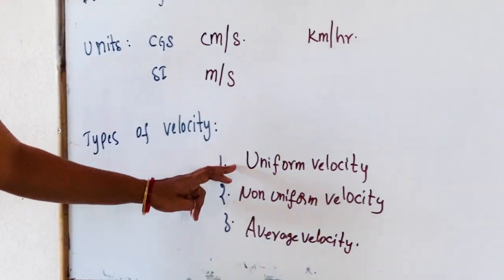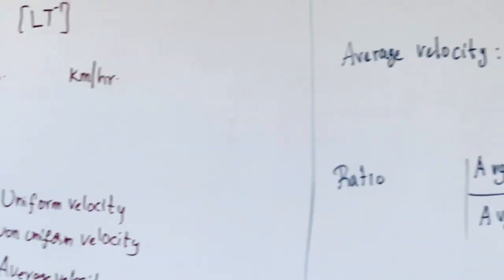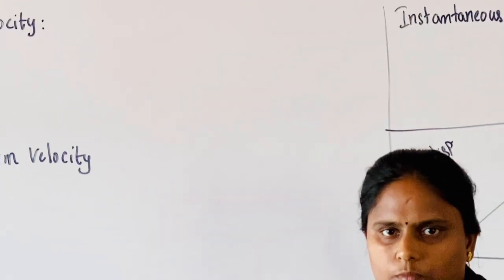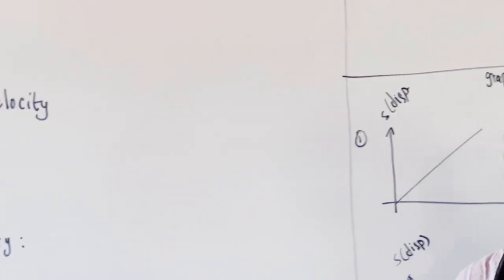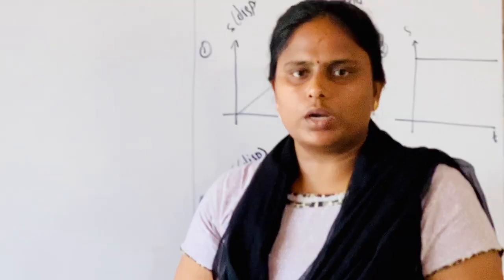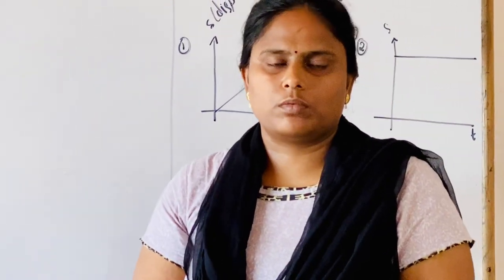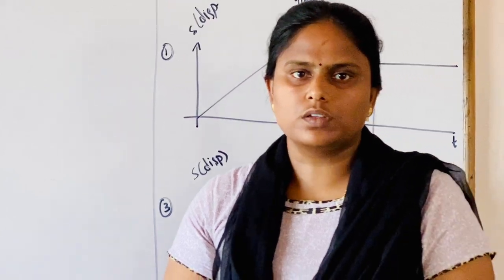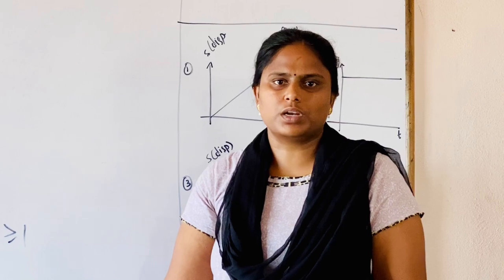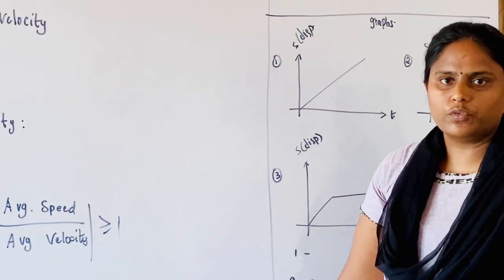Coming to the first one — uniform velocity. If a body moves equal displacements in equal intervals of time, we can say the body is moving with uniform velocity. We can also say that if a body covers equal distances in equal intervals of time in the same direction, it is uniform velocity. The same direction is important because when travelling in the same direction, displacement and distance are equal.